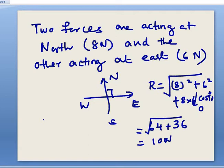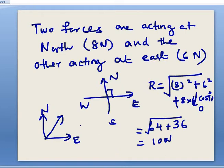Since cos 90° equals zero, this comes out to be 64 plus 36, which equals 10. So the resultant is 10 newtons, acting in the northeast direction — between north and east — with a force of 10 newtons.